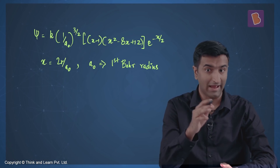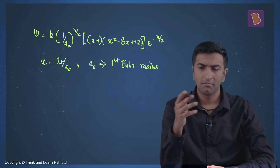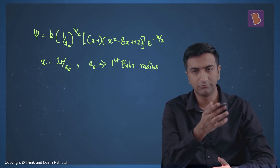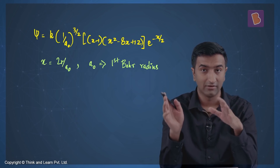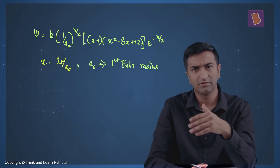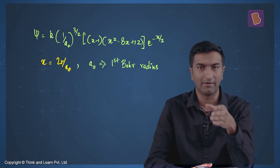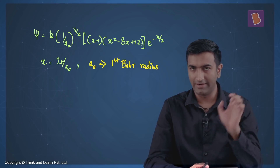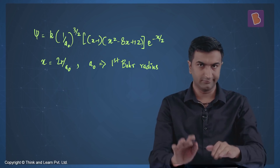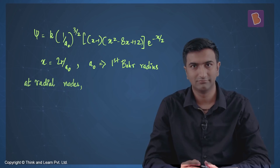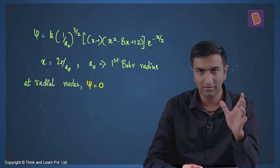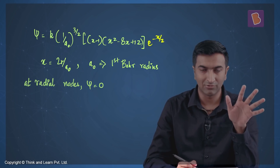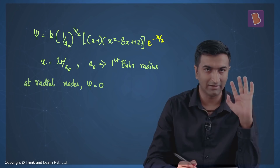This question asks you to find the ratio of the maximum to the middle position of radial nodes for a hydrogen atom that follows this psi function as a function of x, where x = 2r/a₀ and a₀ is the Bohr radius. It looks scary but it's really not. Radial nodes occur when the function psi becomes zero. The exponential term e^(−x/2) never becomes zero, so we can leave that out.